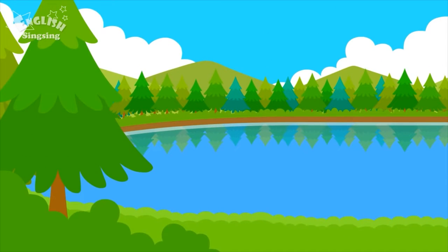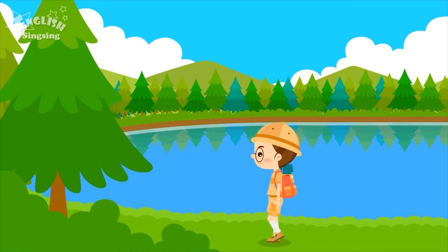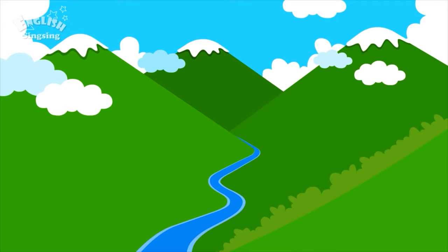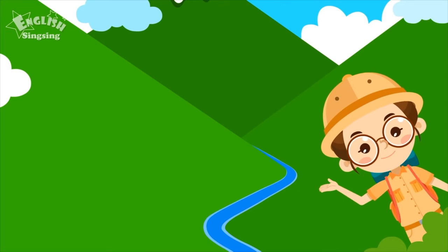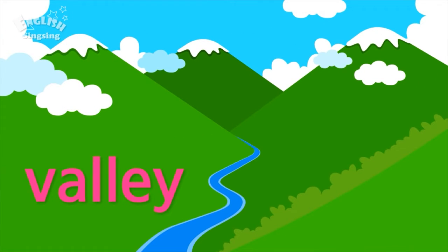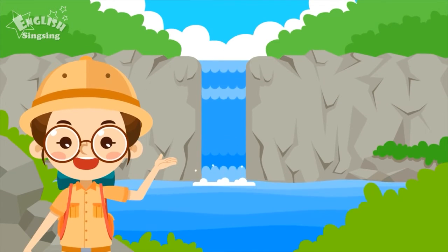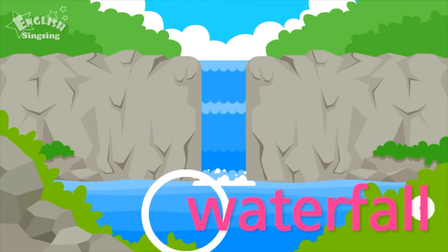River. Lake. A lake is as smooth as a mirror. Lake. Valley. A valley is a low land between two mountains. Valley. Waterfall. A waterfall falls from a cliff. Waterfall.